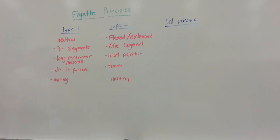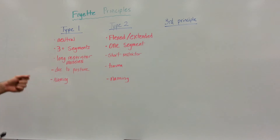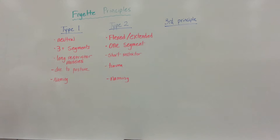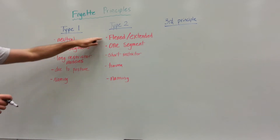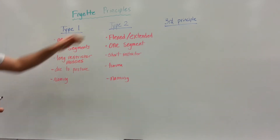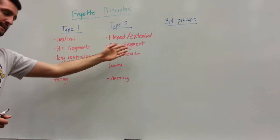Let's quickly go over Freyette's principles. There are three principles that Freyette typically covers. The first principle deals with type 1 somatic dysfunctions. Type 1 somatic dysfunctions are always going to be neutral, meaning they're not going to be flexed or extended. On the other side, type 2s will always be flexed or extended.